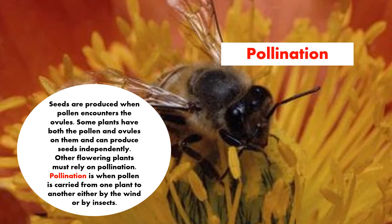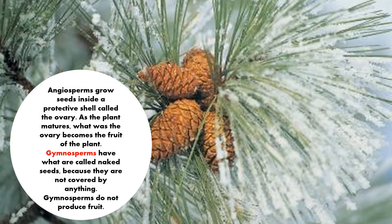Pollination is the word. Angiosperms grow seeds inside a protective cell called the ovary. As the plant matures, what was the ovary becomes the fruit of the plant. Gymnosperms have what are called naked seeds because they are not covered by anything. Gymnosperms do not produce fruit, as you can see from that picture — the example of a gymnosperm there is a cone.